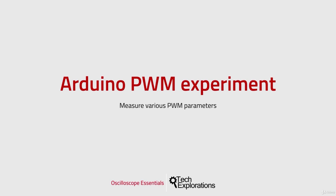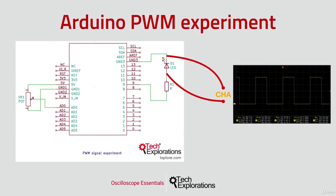Let's have a look at the circuit to begin with. We'll use an Arduino to create a PWM signal and drive an LED. The LED is connected to pin number 9, which is PWM-capable.